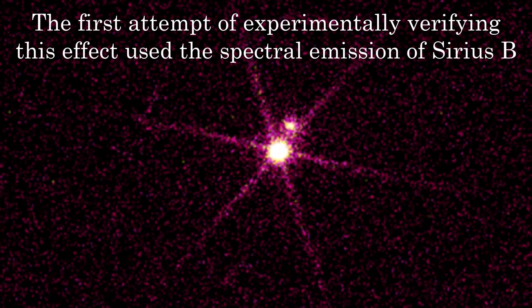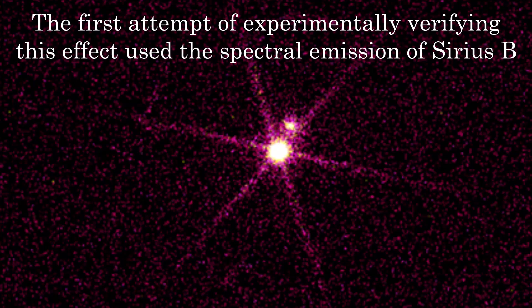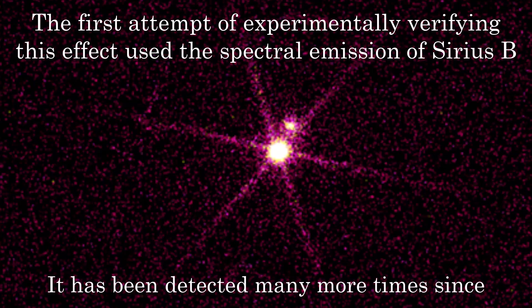In 1925, the gravitational redshift of light from the white dwarf star Sirius B was directly detected by observing its effects on the wavelength of the spectral emission lines of its starlight. Another success for GR.